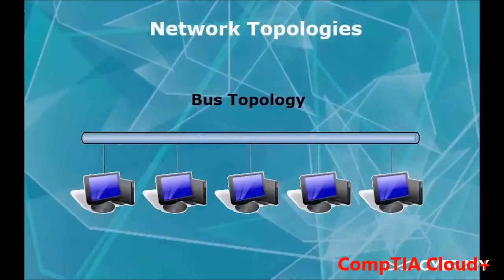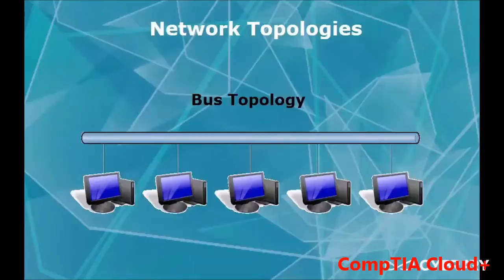On a bus topology, all the computers are connected in a straight line. Most of the time this is used with a BNC connector, not really used a whole lot anymore. The main reason is that if there is a break anywhere in the line, the network goes down. On each end of the bus cable, there has to be a terminator to absorb all the data so that it's not bounced back.